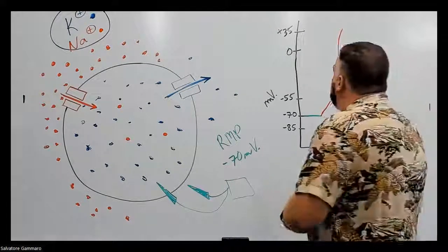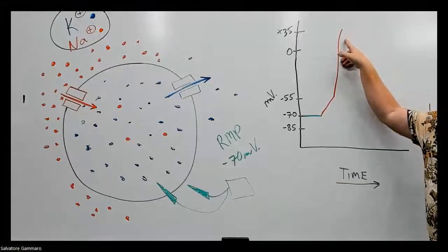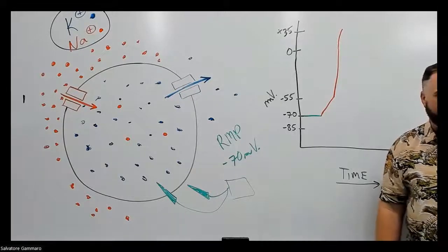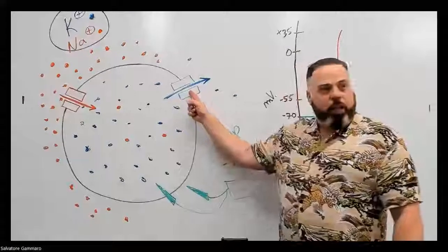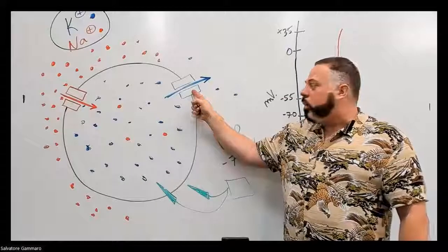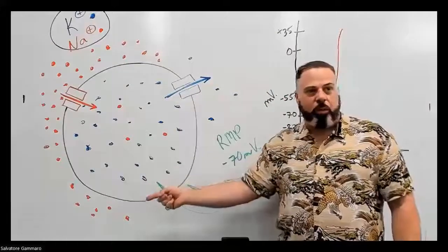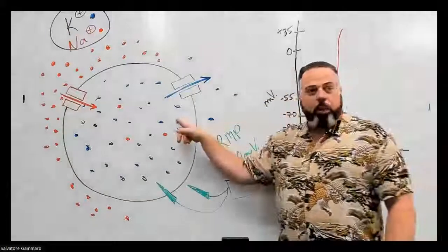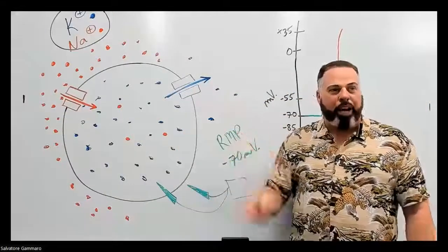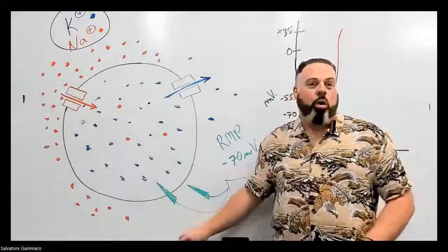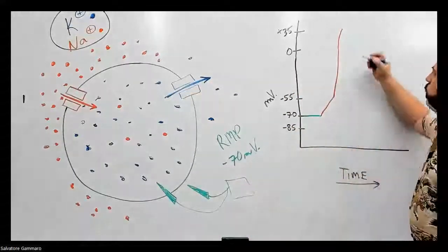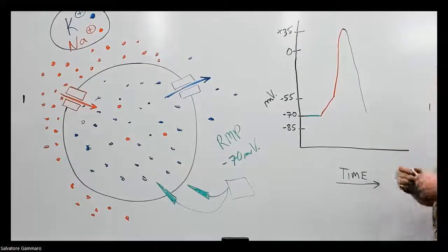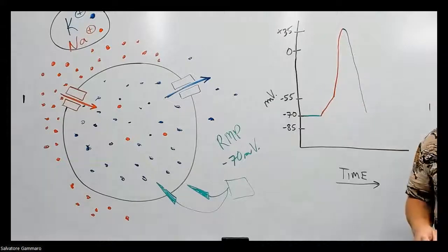At the same time that sodium channels close very fast, potassium channels are going to open very fast. If potassium channels open, does the potassium want to leave or enter the cell? Leave the cell. If it leaves, does the cell become more negative or more positive? More negative, less positive. So you're going to start seeing the graph come down — and it's due to the potassium channels.